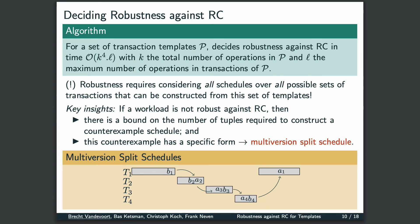The general idea of multiversion split schedules is as follows: the first transaction T1 is split in two parts, and the remaining transactions are placed in between in a serial fashion. Furthermore, there should be a dependency from each transaction to the next, as indicated by the arrows in the figure.